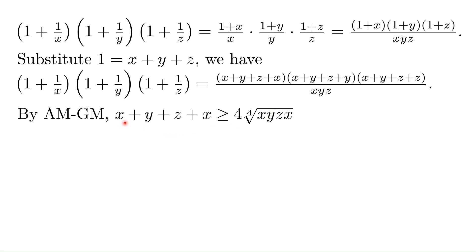For example, the first one, the sum of four numbers x, y, z, and x is greater than or equal to 4 times the geometric mean of the four numbers, the fourth root of x, y, z, x. Notice that we didn't combine x with x because we want the equality to hold when x equals y equals z equals x.